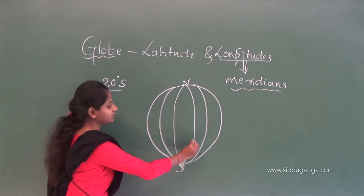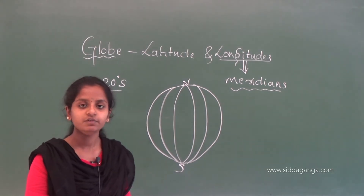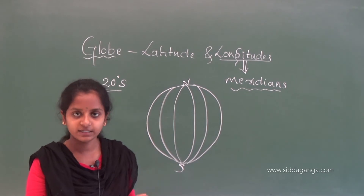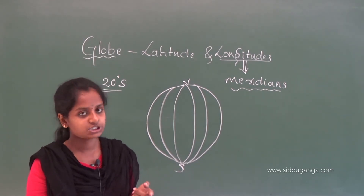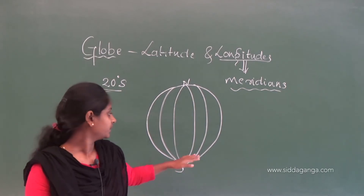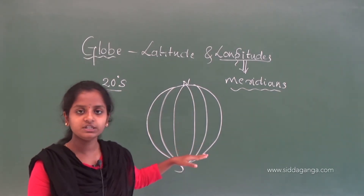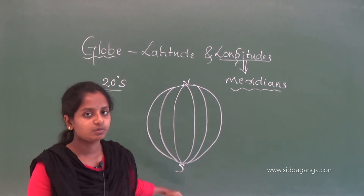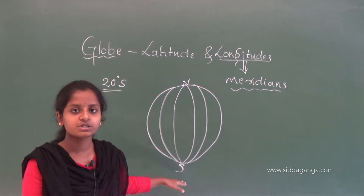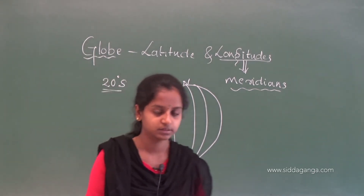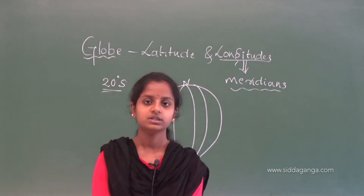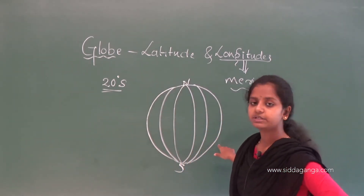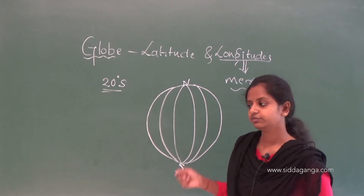At the poles, all the meridians meet. So the distance between the longitudes decreases from equator to poles, whereas in the latitude case it remains the same. Longitudes are also mentioned in degrees, and further in minutes and seconds.